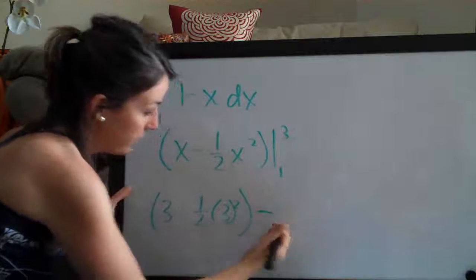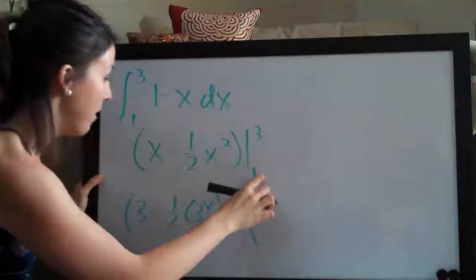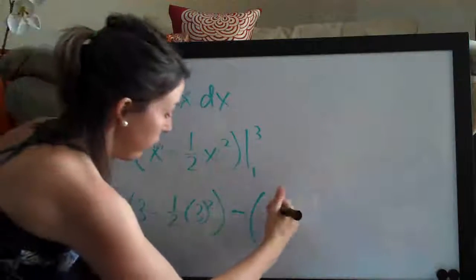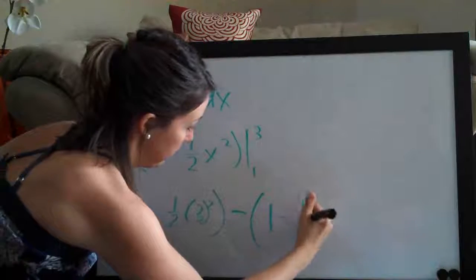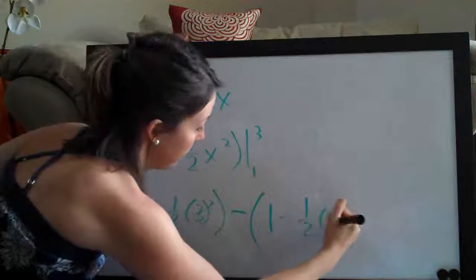And then we always subtract and then plug in the bottom number, in this case 1. So that looks like 1 minus 1 half times 1 squared.